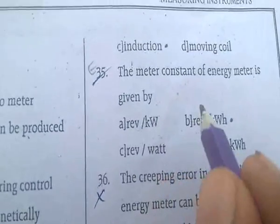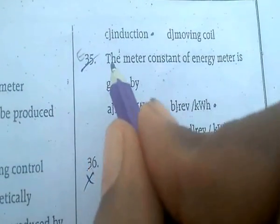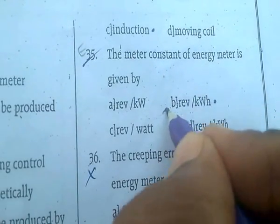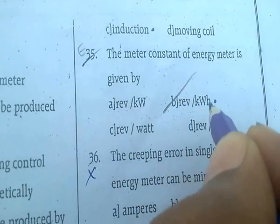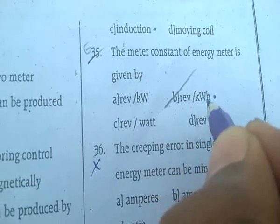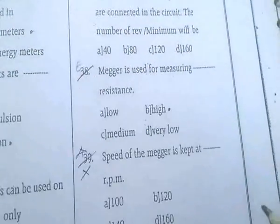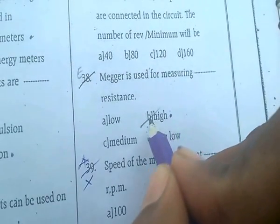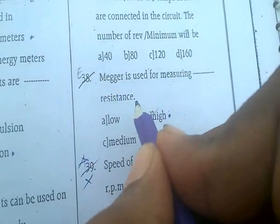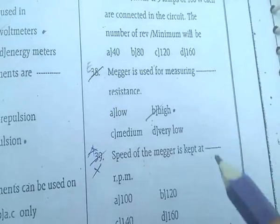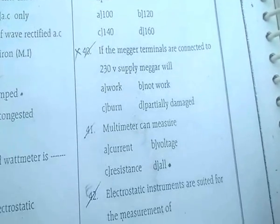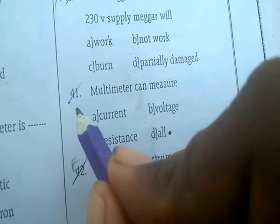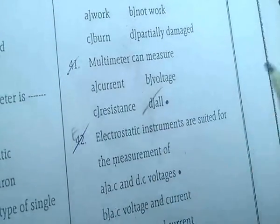The meter constant of an energy meter is given in revolutions per kilowatt-hour. A Megger is used for measuring high resistance. A multimeter can measure both current, voltage, and resistance — the answer is all.